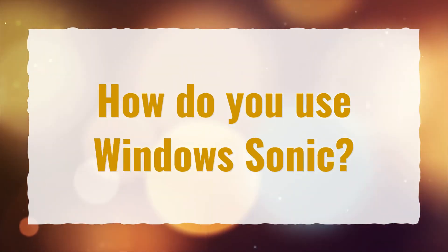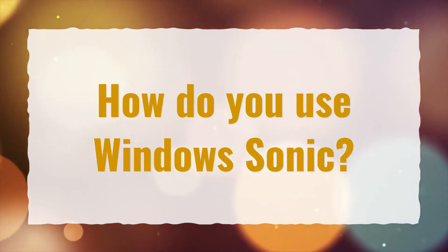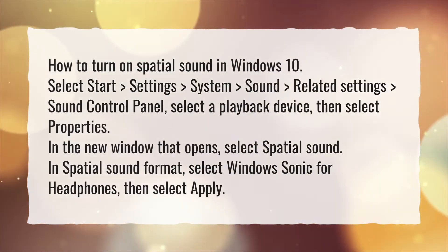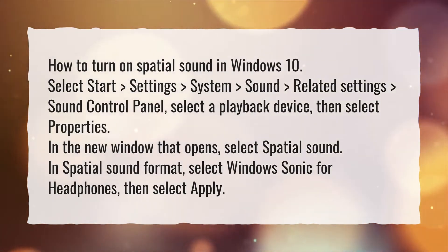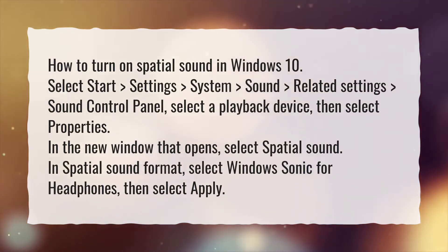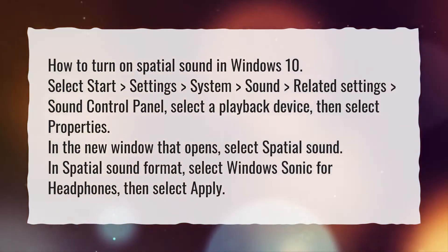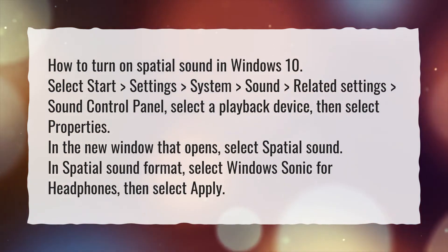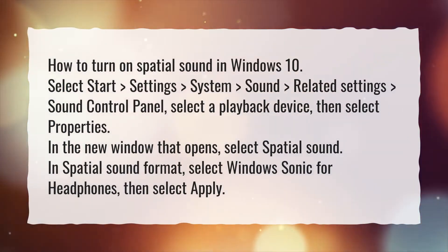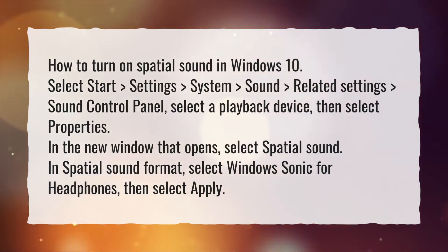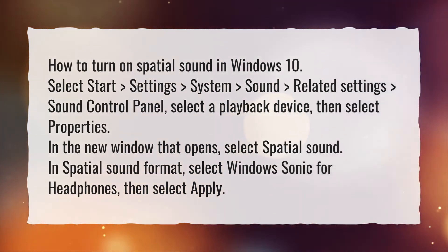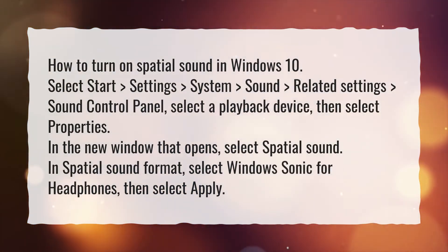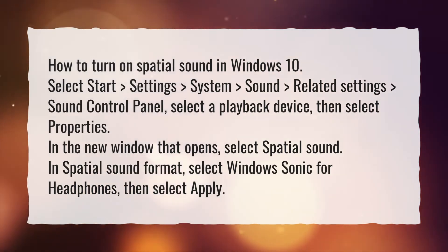How do you use Windows Sonic? How to turn on spatial sound in Windows 10: Select Start, Settings, System, Sound, Related Settings, Sound Control Panel. Select a playback device, then select Properties. In the new window that opens, select Spatial Sound. In the spatial sound format, select Windows Sonic for Headphones, then select Apply.